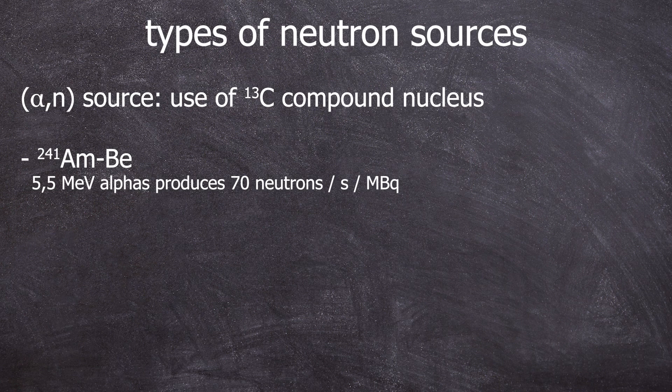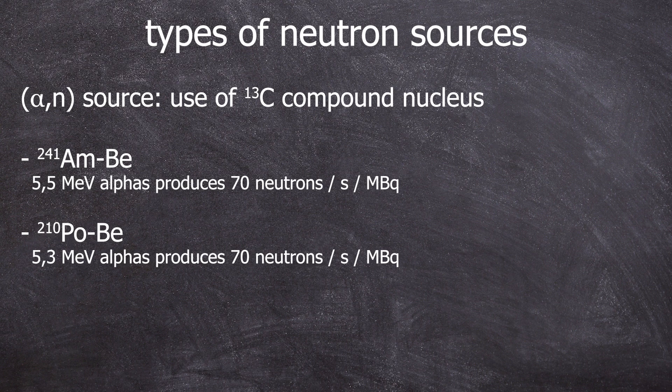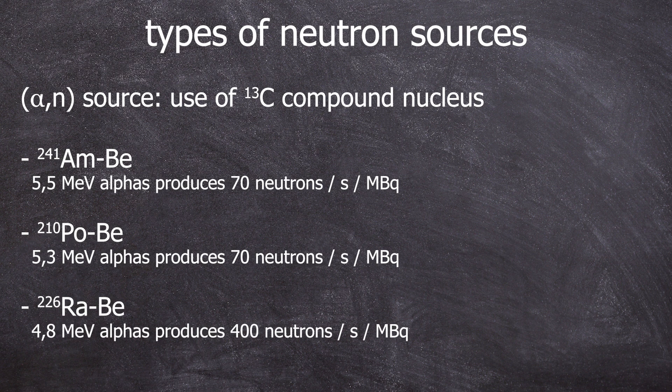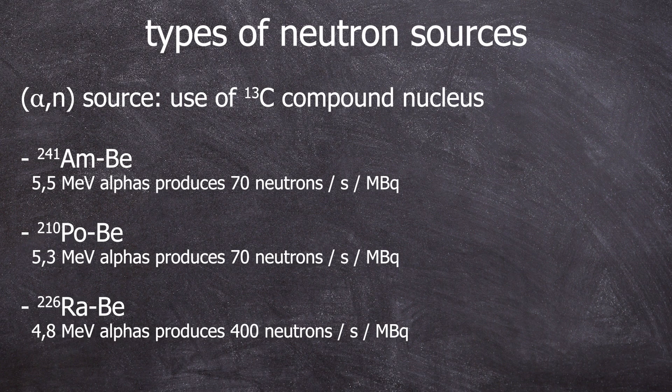With the americium beryllium source, you get about 70 neutrons per second per megabecquerel of alphas. The same would work with polonium-210, where you would get the same number of neutrons. And if you use radium as an alpha source, you get about 400 neutrons per second per megabecquerel of alphas.